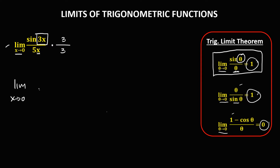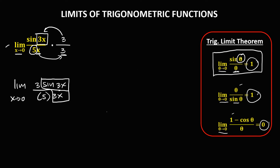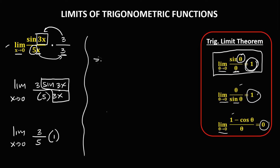Simplifying, we have the limit as x approaches 0. Multiplying gives us 3 in the numerator, then sine 3x. For the denominator, combining x and 3 gives 3x, then times 5. Now we have sine 3x over 3x, which matches sine θ over θ, equal to 1. Therefore, the limit equals 3 over 5 times 1, so the final answer is 3 over 5.